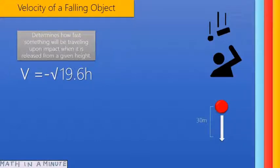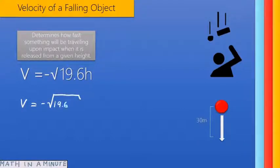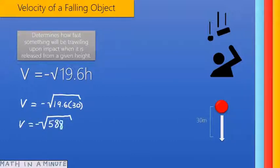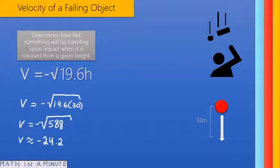Now let's calculate the velocity of an object after it falls 30 meters. Plug in h equals 30 and solve. We will simplify within the radical, giving us negative square root of 588. Now we will evaluate the square root, giving us around negative 24.2 meters per second.